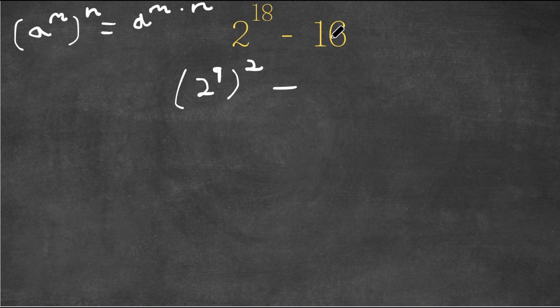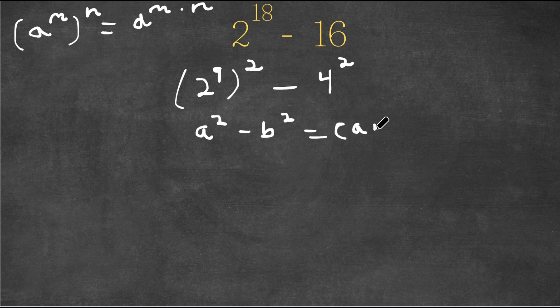So you have this minus, now 16, I'm going to rewrite as 4 squared. And if there's something in the form A squared minus B squared, this is actually equal to A plus B times A minus B.